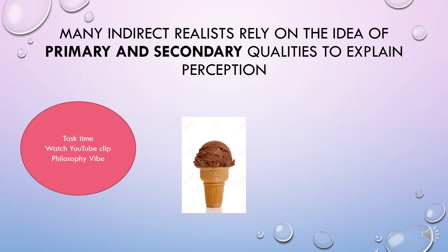We've talked about indirect realists relying on sense data to explain our perceptions as a mediating element between the external world and our mind. But many indirect realists, including John Locke, rely on the idea of something else: the difference between primary and secondary qualities of objects to explain perception.